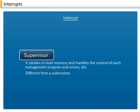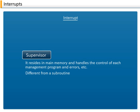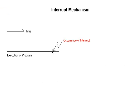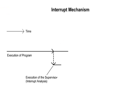The supervisor resides in main memory and handles unpredictable events such as control of each management program and errors. The function that handles these irregular events is the interrupt. It is basically different from a so-called subroutine that is called from the program. When an interrupt occurs, the supervisor suspends the program running at that time. It then investigates the cause and executes an interrupt processing program to deal with it.